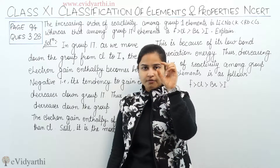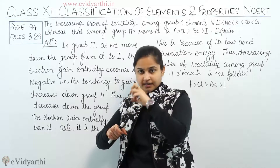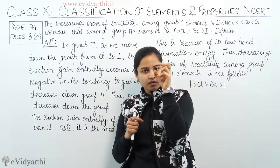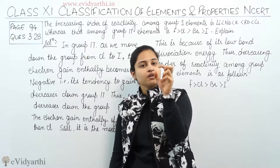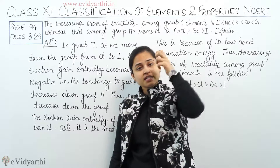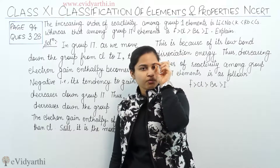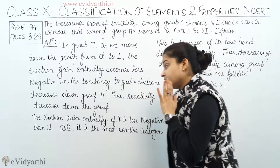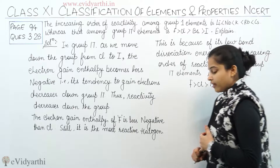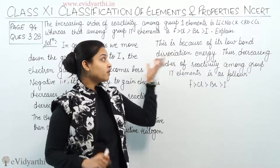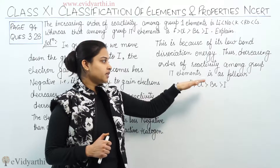Fluorine's electron gain enthalpy is less negative than chlorine's, and from chlorine to iodine the electron gain enthalpy becomes progressively less negative. Even though fluorine has a less negative electron gain enthalpy than chlorine, fluorine is still the most reactive halogen because of its low bond dissociation energy. Therefore, the decreasing order of reactivity in Group 17 is: fluorine, then chlorine, then bromine, then iodine.